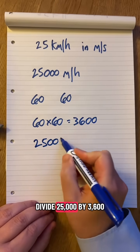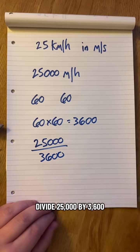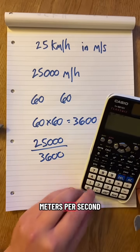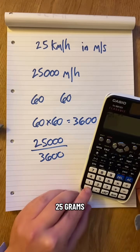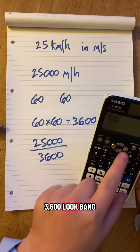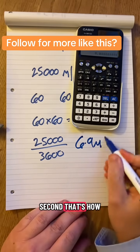,000 by 3,600, this would give me 25 kilometers an hour in meters per second. Here we go, 25,000 divided by 3,600, 6.9 meters per second.